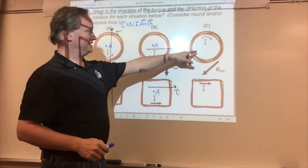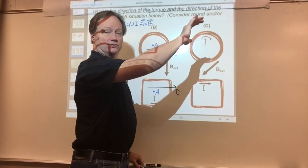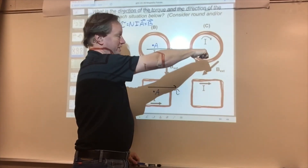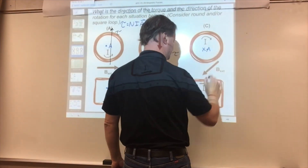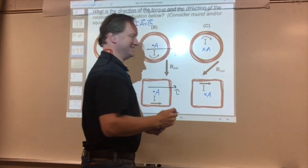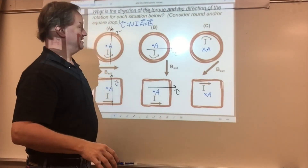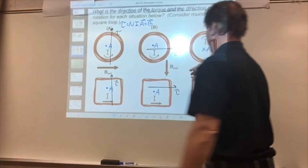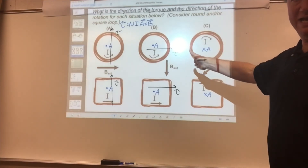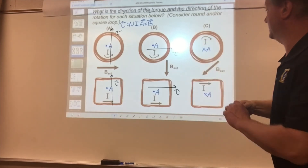Part C. Now my current is flowing in that direction, so if I wrap my fingers around in that direction, my thumb is going to point into the board, and so my area vector on each of those is into the board. Now NiA cross B — fingers go in the direction of A. I have to wrap to the direction of B, so here is A into the board. I wrap into the direction of B, so my fingers turn like this, and my thumb is pointing diagonally upward.